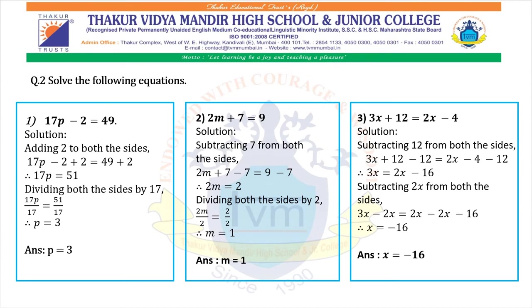Third: 3x plus 12 equals 2x minus 4. Subtracting 12 from both sides: 3x plus 12 minus 12 equals 2x minus 4 minus 12. Therefore 3x equals 2x minus 16. Now subtracting 2x from both sides: 3x minus 2x equals 2x minus 2x minus 16. Therefore x equals minus 16. The answer is x equals minus 16.